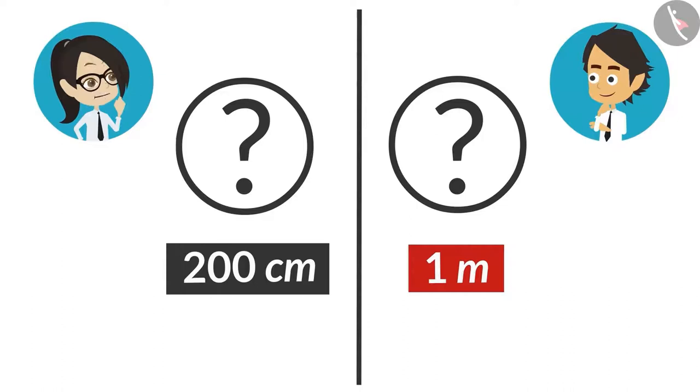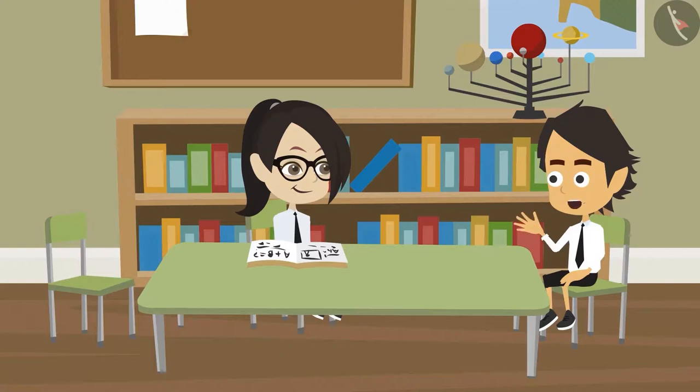I knew that would be your answer. What did you think? Have I said anything wrong? Yes, you got it wrong. You do one thing. Draw lines of both these lengths on the floor and see. Okay.